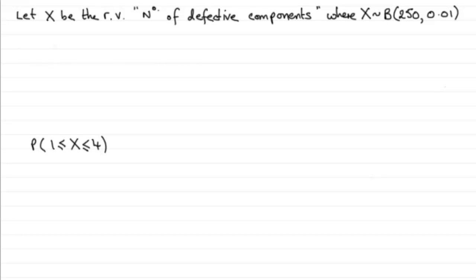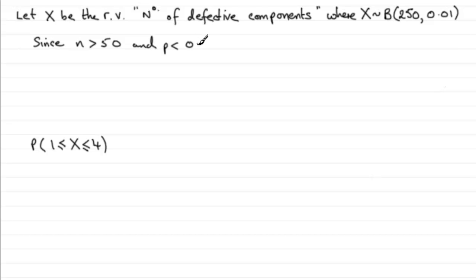What I'm going to write here is that since N is greater than 50 and the probability of success is less than 0.1, this condition allows us to say that therefore X is distributed as a Poisson distribution with a mean of lambda, approximately.